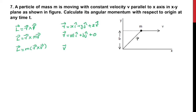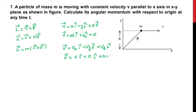The velocity vector v equals vx·î plus vy·ĵ plus vz·k̂. As seen from the picture, the particle is moving only along the x-axis, so the velocity vector equals v·î + 0·ĵ + 0·k̂. There is no component along the y-axis or z-axis.